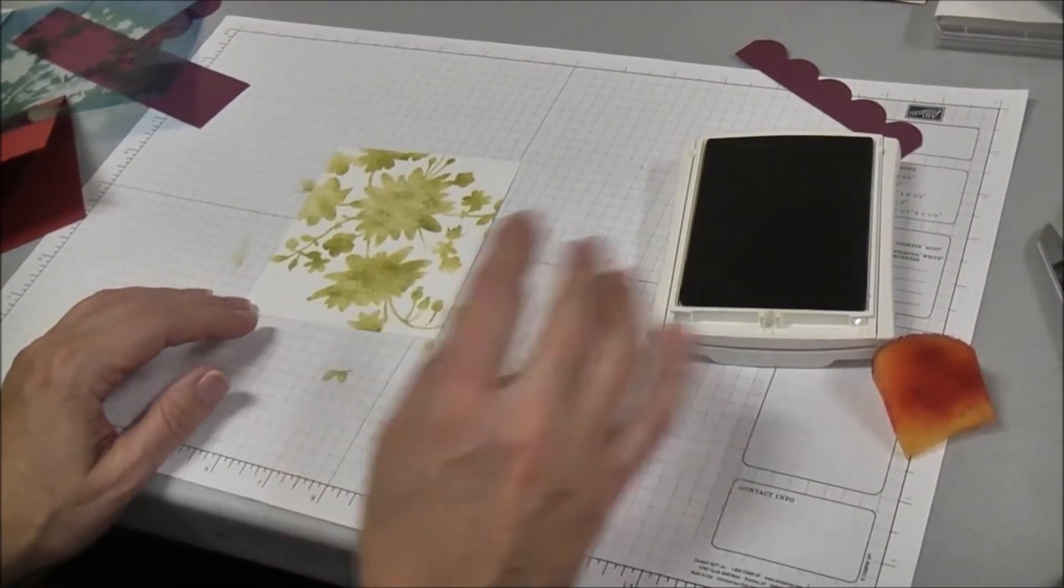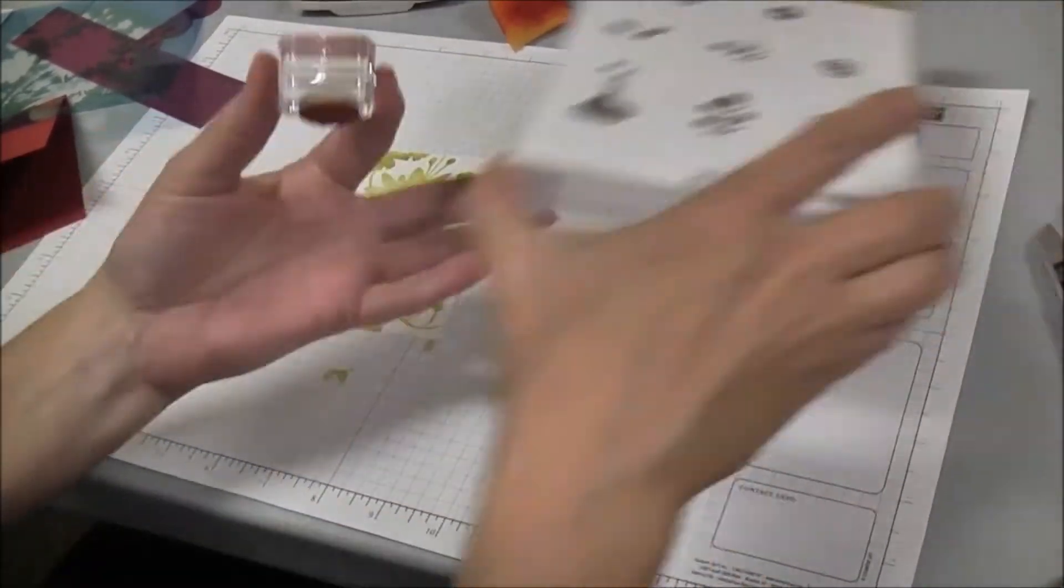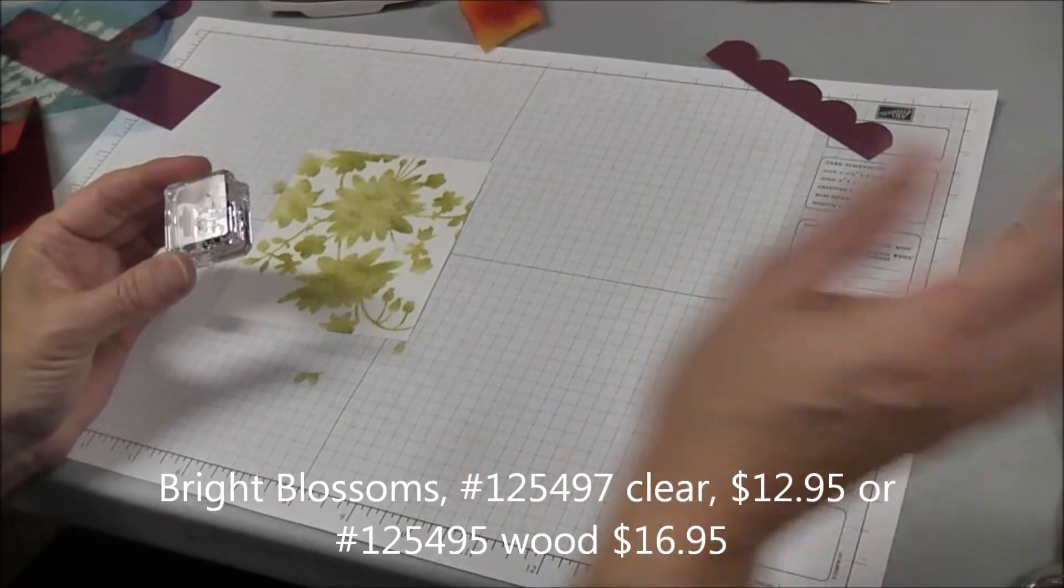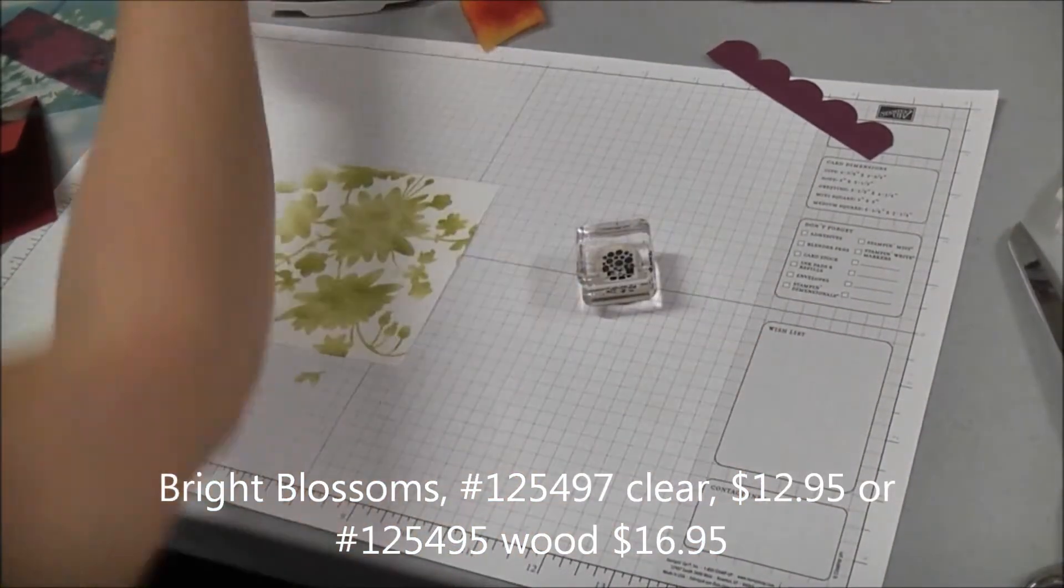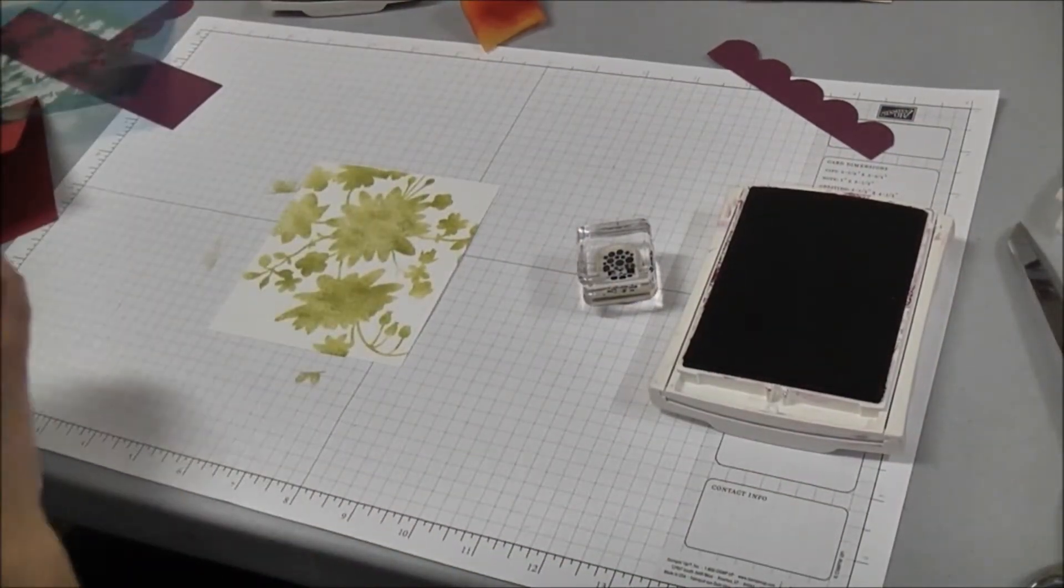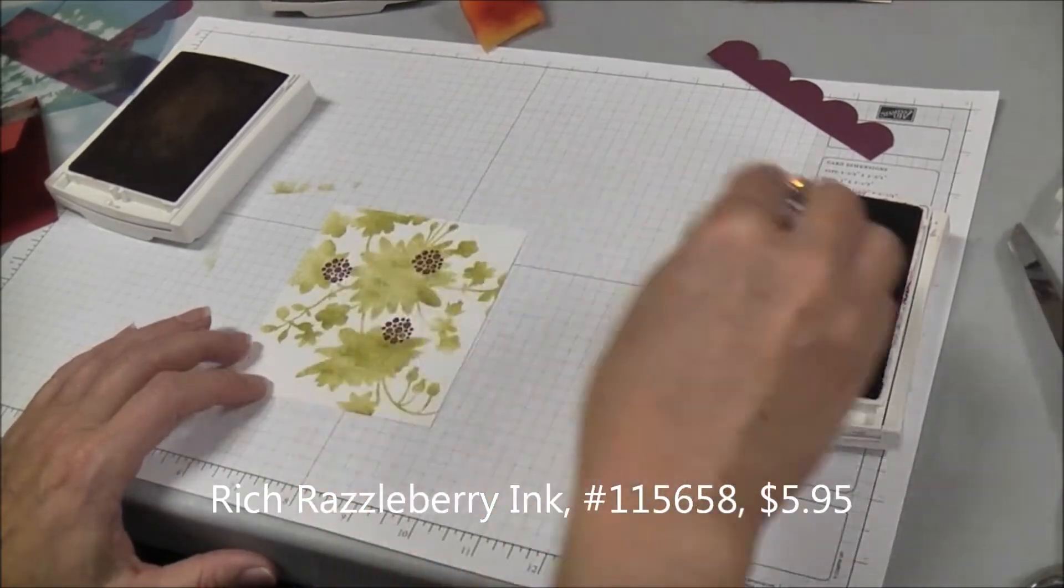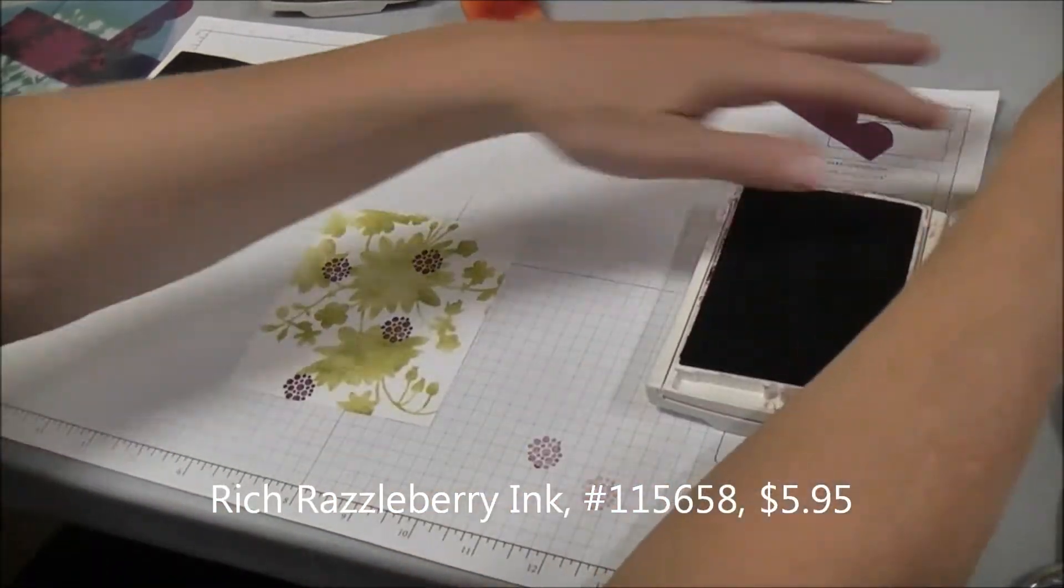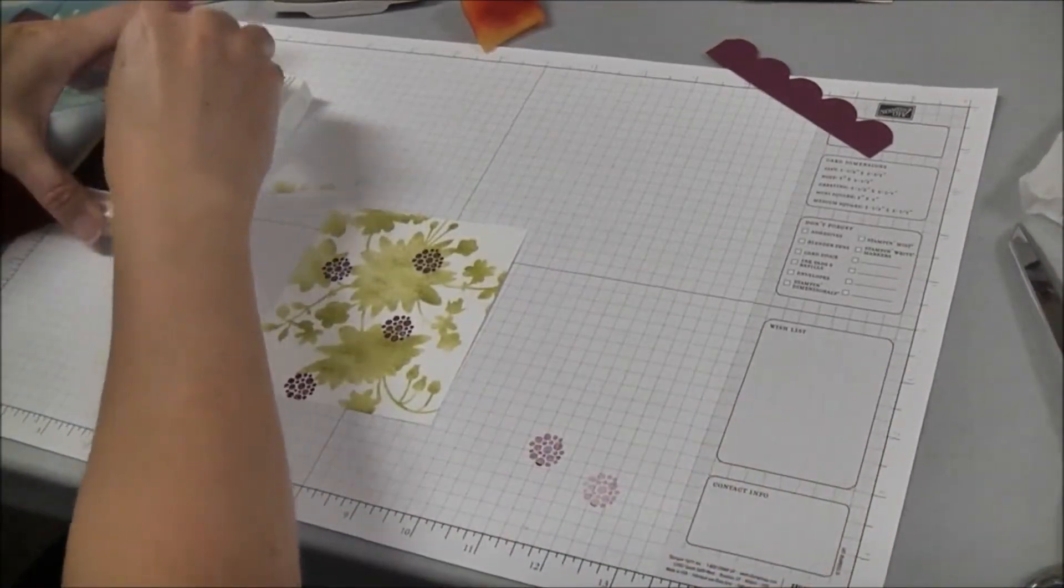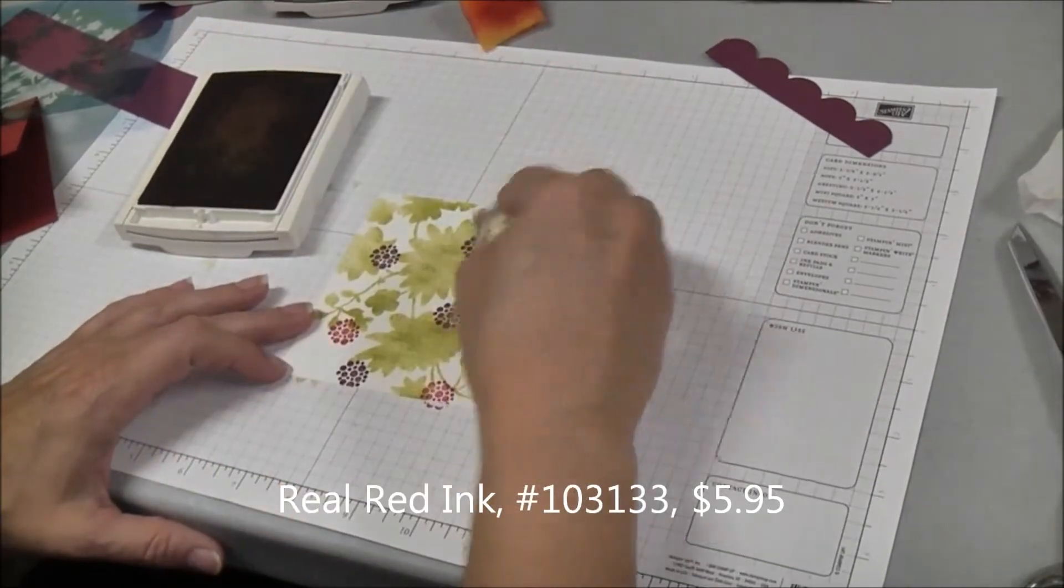Next we're going to take a stamp from the stamp set, which is also a sneak peek just for the month of April, Bright Blossoms, and we're going to stamp the flower in rich razzleberry and in real red. Just in a random pattern we're going to do some rich razzleberry flowers, and then I'm going to clean off my flower, get the rich razzleberry off, and go to my real red pad and add some real red flowers on the card too.